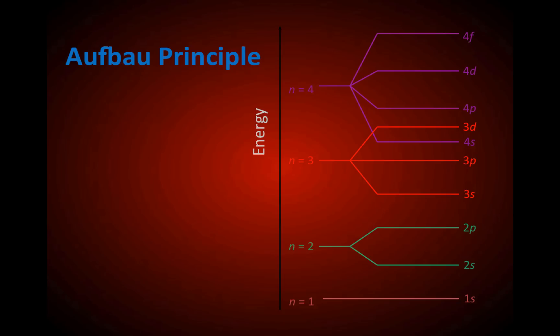According to Aufbau, electrons fill the lowest energy levels first. So the order goes: 1S, 2S, 2P, 3S, 3P, 4S, 3D, 4P, and so on.